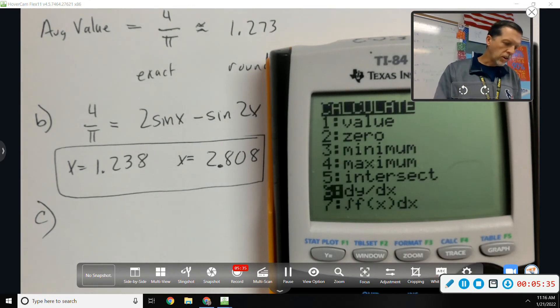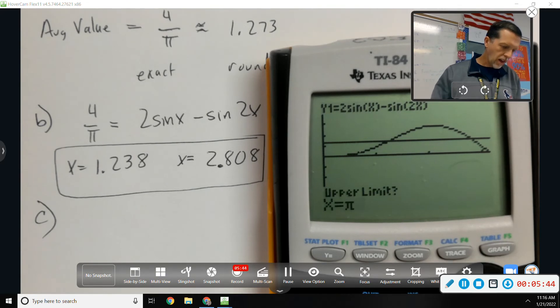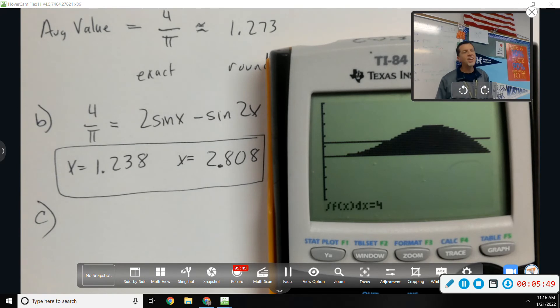I don't know if we've done this, but you can also integrate on the graph. Lower limit, zero. Upper limit, pi. And the advantage of integrating on the graph is that it shades it in and sort of reminds you, hey, we just found the area. Also looks really cool. So, that area is four. That's what we got earlier, but now it's shaded in.